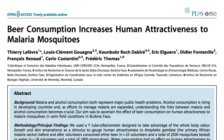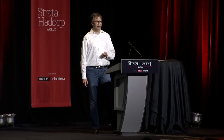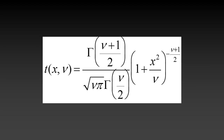To do the statistics that we just did, you needed three essential things: the ability to follow a straightforward logical argument, random number generation, and iteration. You were born with the first of these three things, and the second two are provided by any decent programming language with a good library. With these three things, you have everything you need to understand this argument at a very deep, fundamental level — in contrast with the analytical formula, the details of which you really need years of study to come to grips with. That simple computational method is called a random permutation test, and it's just one of a whole class of methods known as resampling methods.